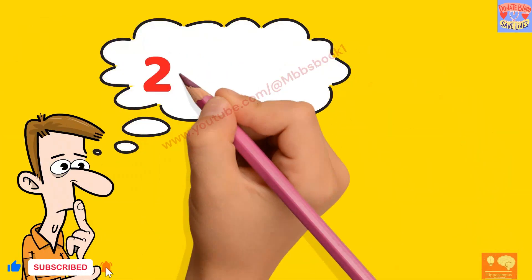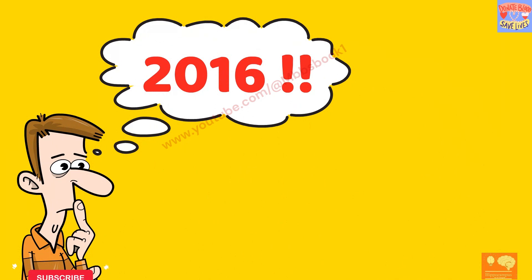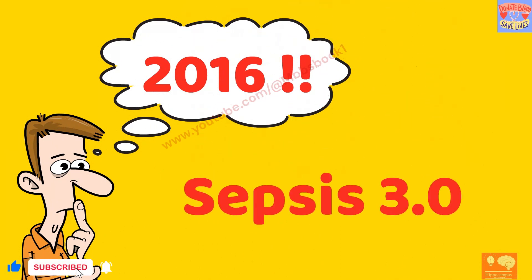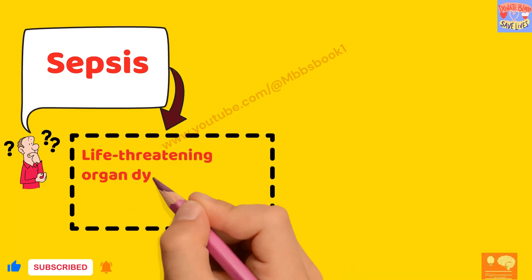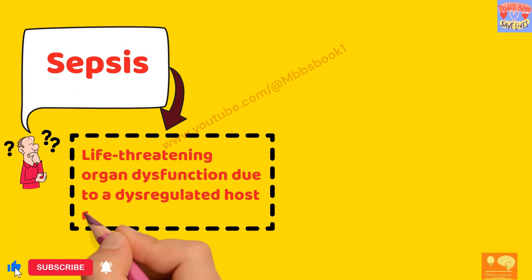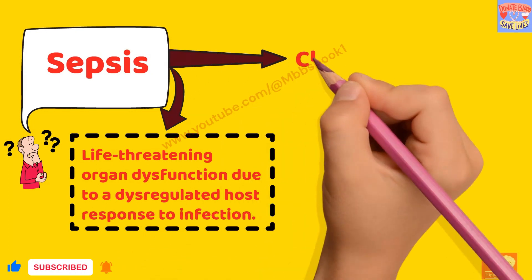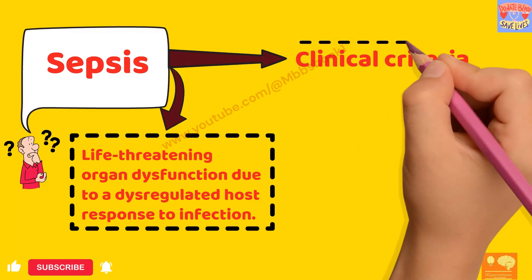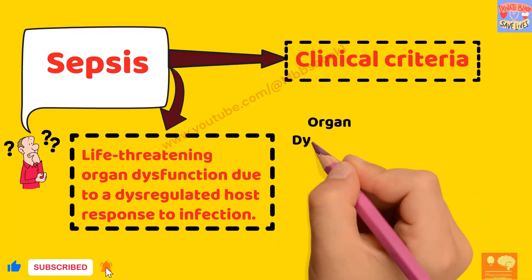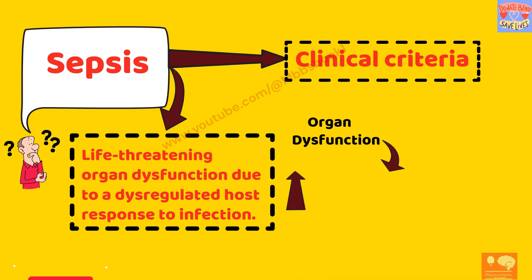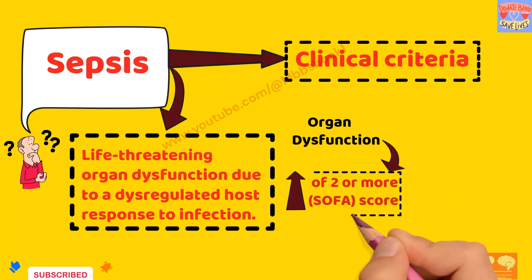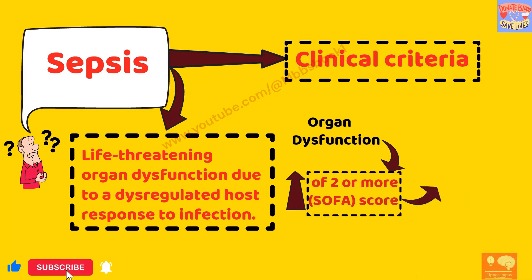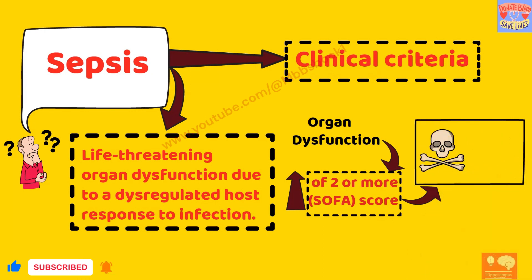In 2016, a new guideline was released — Sepsis 3.0. According to these latest guidelines, sepsis is defined as life-threatening organ dysfunction due to a dysregulated host response to infection. The clinical criteria for sepsis: organ dysfunction is defined as an increase of 2 points or more in the SOFA score. For patients with infections, an increase of 2 SOFA points gives an overall mortality rate of 10%.